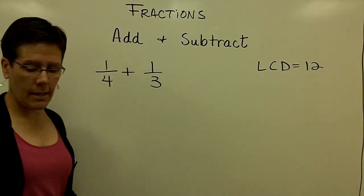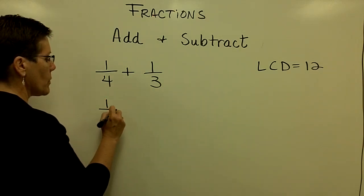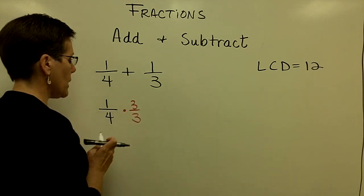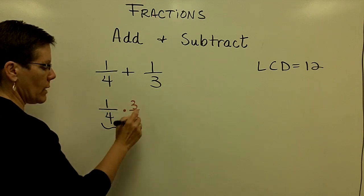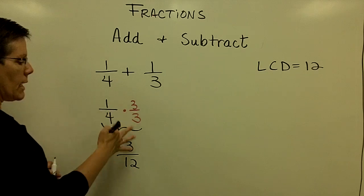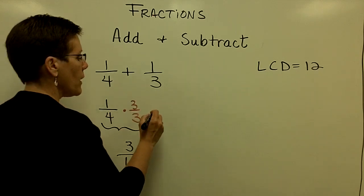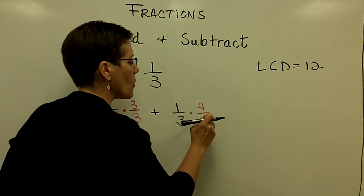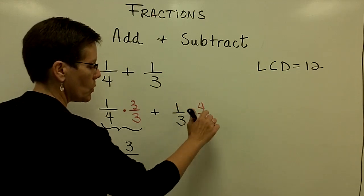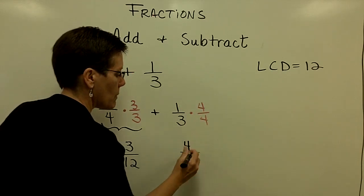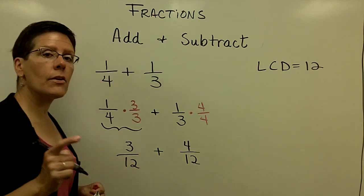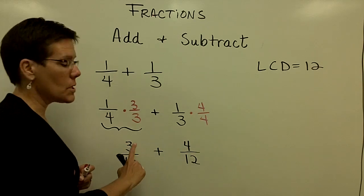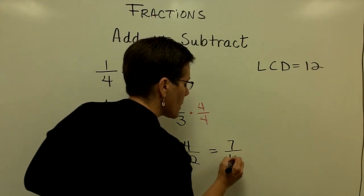I need to take each fraction and multiply it by the number 1. The fraction 1 fourth has to be multiplied by 1 in the form of 3 over 3, so it becomes 3 in the numerator and 12 in the denominator — an equivalent fraction. The fraction 1 third needs to be multiplied by 4 over 4, giving a numerator of 4 and denominator of 12. When I add those together, I only add the numerators: 3 twelfths plus 4 twelfths gives 7 over 12.